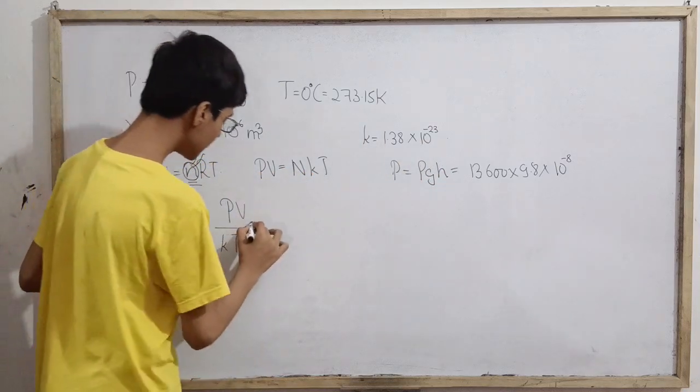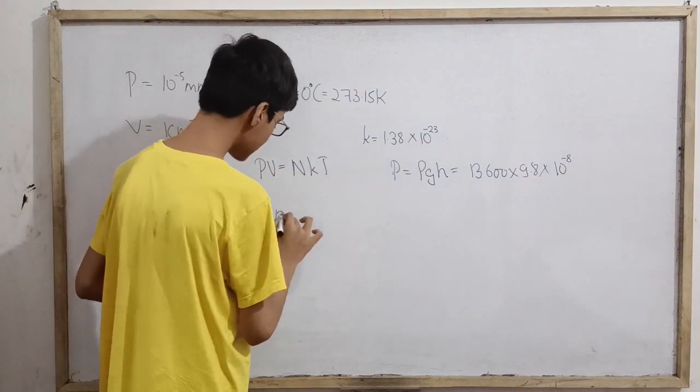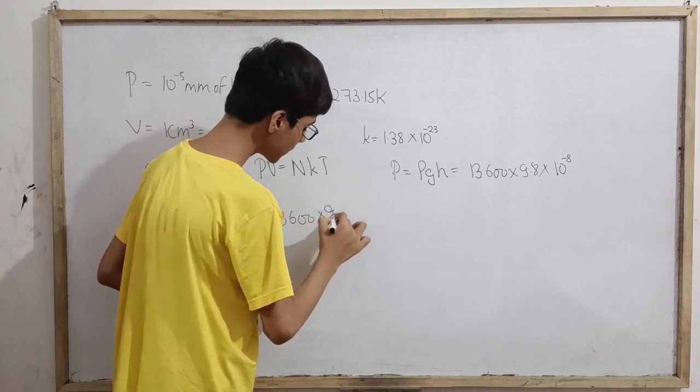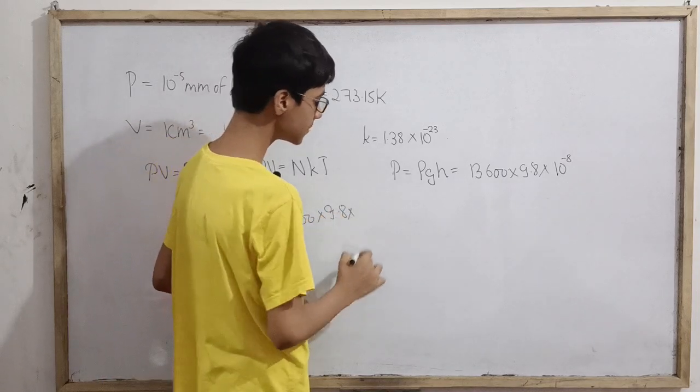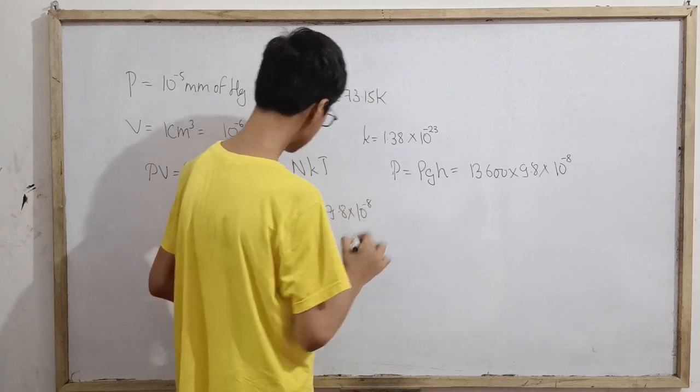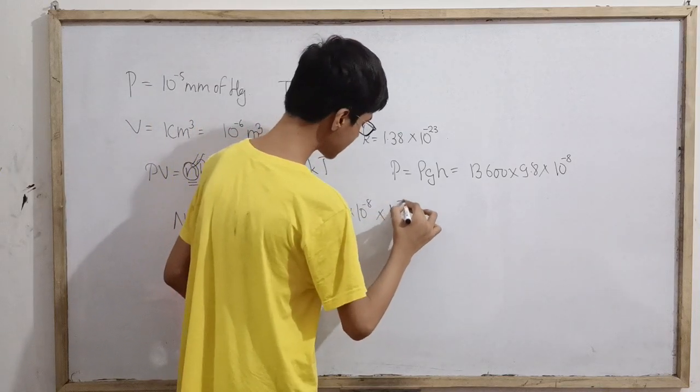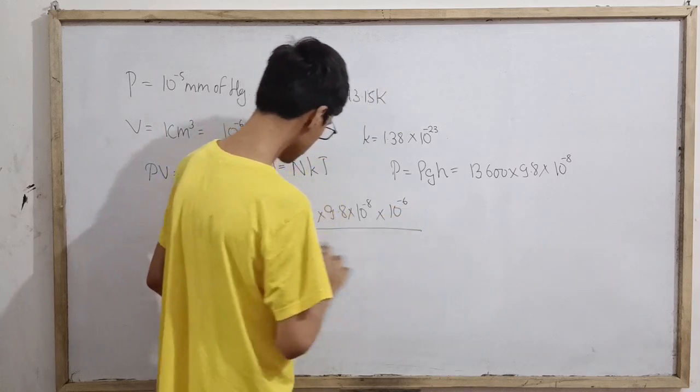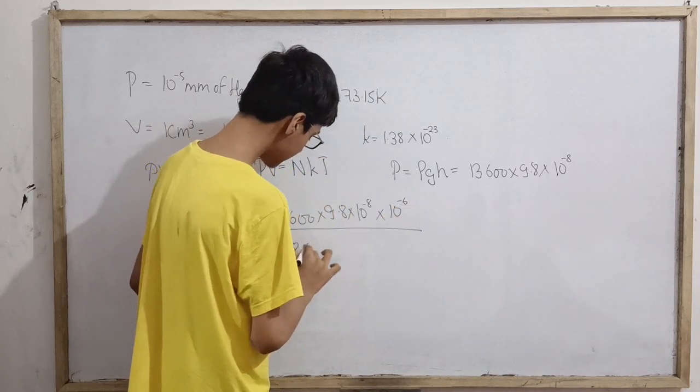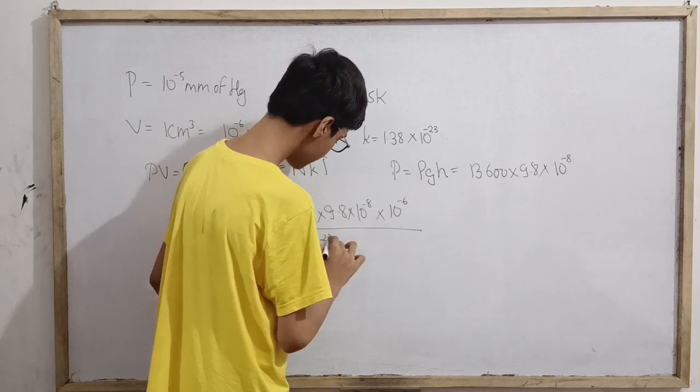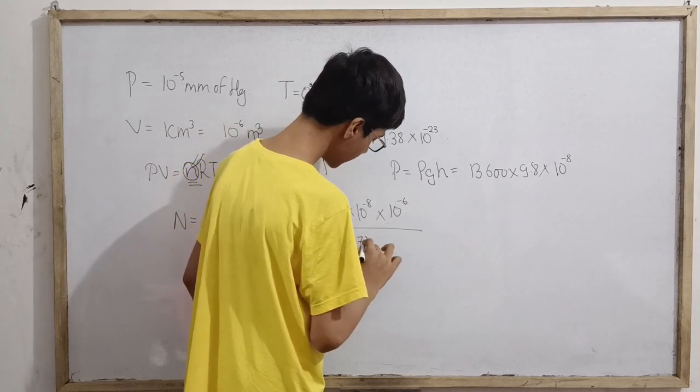So here we just have to put the values: 13,600 into 9.8 into 10 to the power minus 8, and then volume 10 to the power minus 6, divided by Boltzmann constant 1.38 into 10 to the power minus 23 and into 273.15.